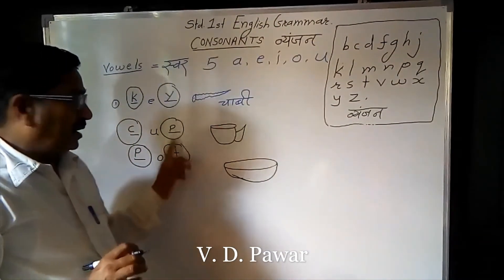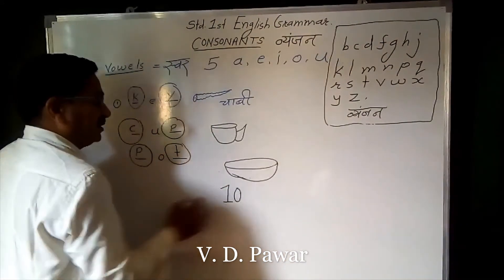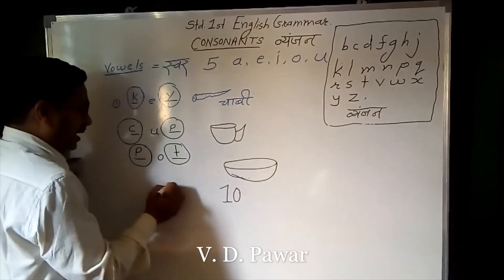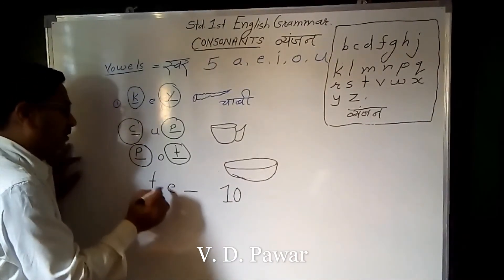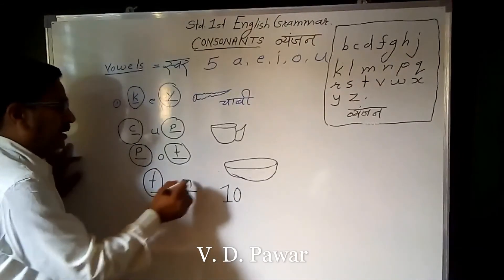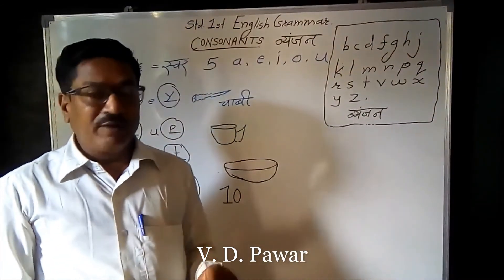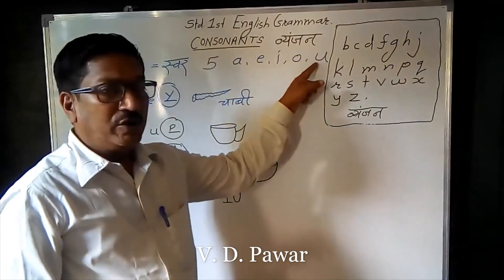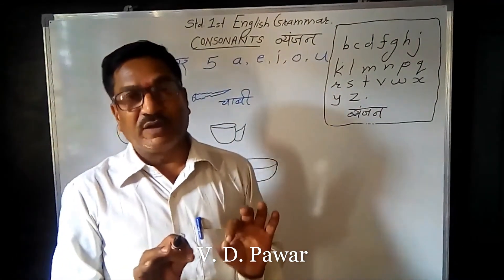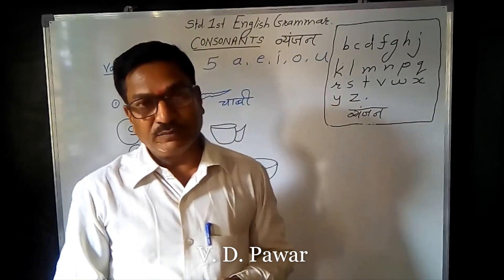मुलांनो, तुम्हाला vyanjan दिया आहे. अच्छे अनेक शब्द आहेत. उदाहरणार्थ, तुम्हाला येथे एक चित्र दिले आहे — TEN चे चित्र. TEN ची spelling: T, E, N. T हे vyanjan आहे, N हे vyanjan आहे, आणि मध्ये आलेला E हे vowel आहे. A, E, I, O, U — these are the five vowels, and the consonants are 21. Okay, ध्यान में रखो। Thank you.